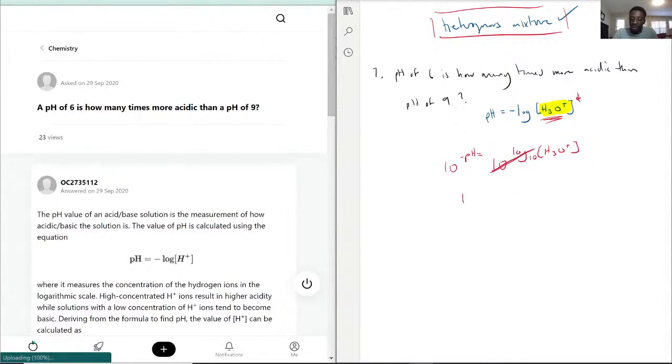So now we're left with, if we switch it over to make more sense, the concentration of H3O, aka how many times more acidic, is equal to 10 to the power of negative pH.